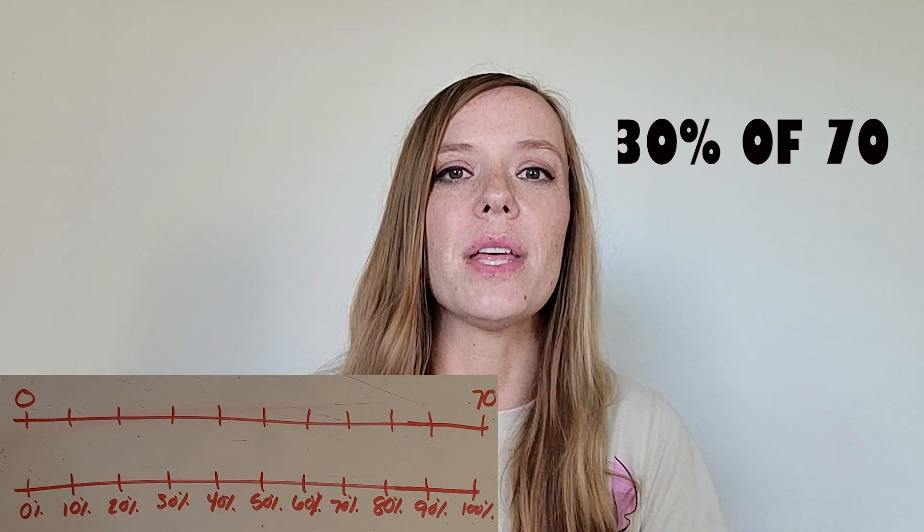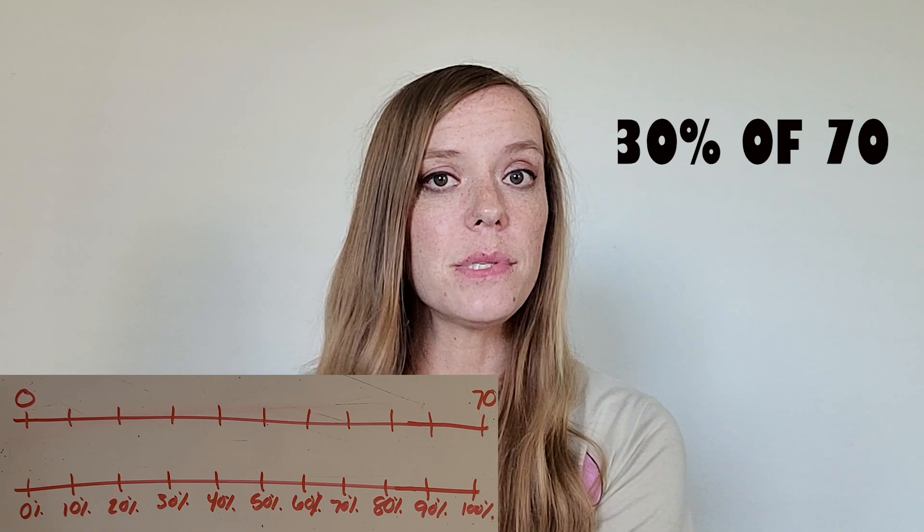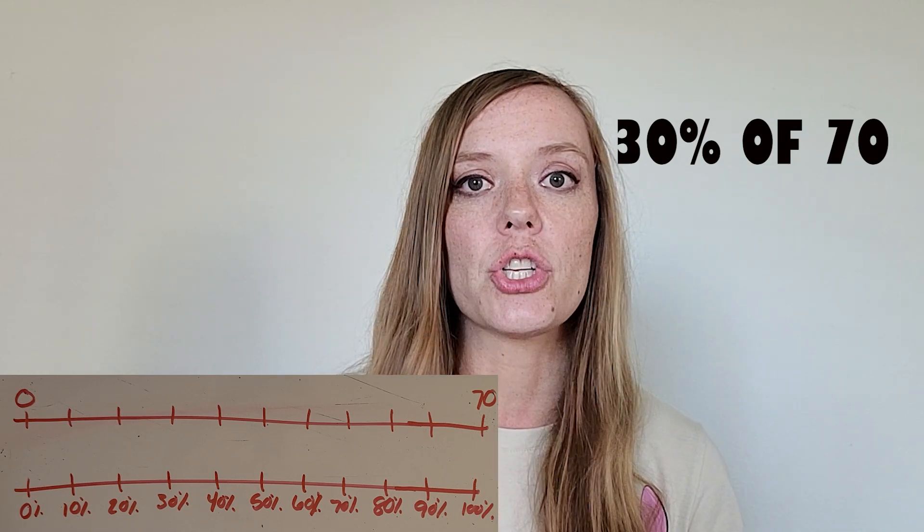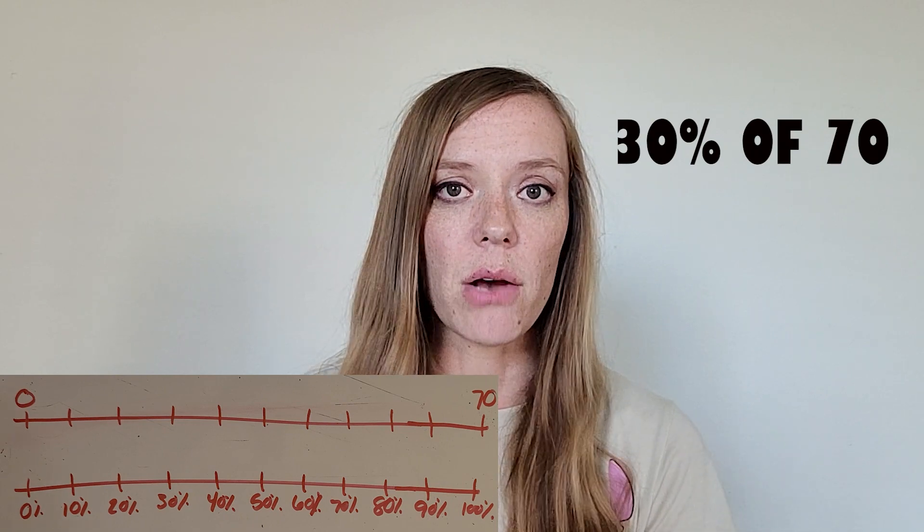You got it, it's 7. So if I count by 7s 10 times I'm going to hit 70. Then I'll be able to match these percentages with an amount.